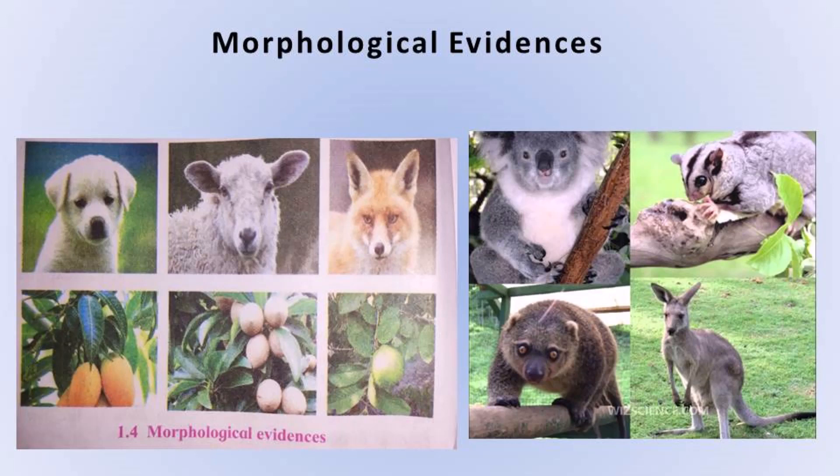First of all we should know what is meant by morphology. Morphology means the structure of an object — the external appearance or external structure of that animal or plant is called morphology. For example, morphology of a leaf or morphology of a flower. If we want to describe the morphology of a flower, we will see how many petals are there, how many sepals are there, the shape of the sepal. This is called the morphology of a flower. Morphology means the external structure, appearance, and shape.